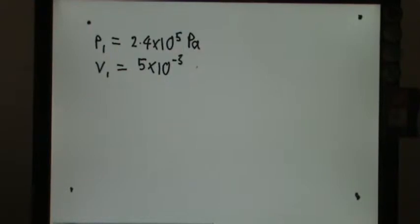Next question. Combined gas law. A constant mass of gas at a pressure of 2.4 times 10 power of 5 pascal is enclosed in a gas vessel of volume 5 times 10 power of negative 3 meter cube.